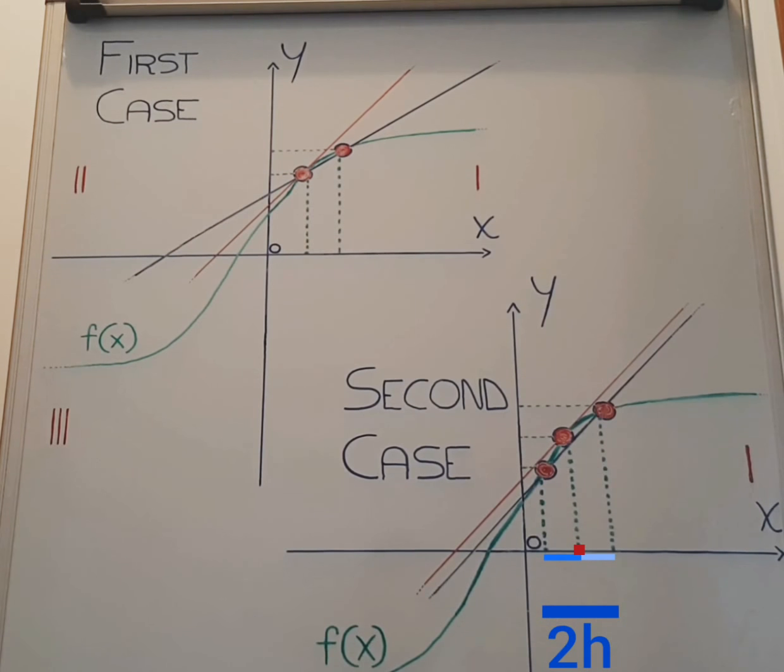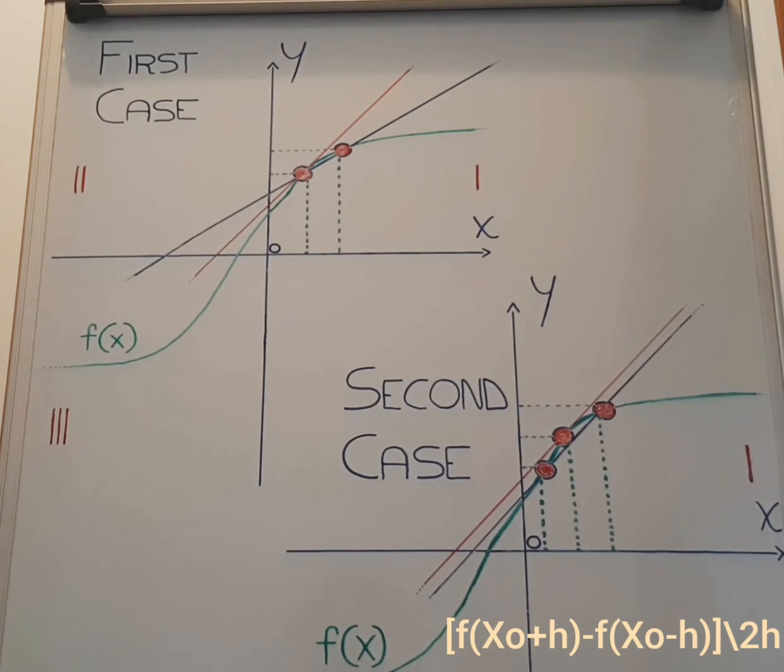In this way, the incremental ratio will result to be f(x0 + h) minus f(x0 minus h) divided by 2h.